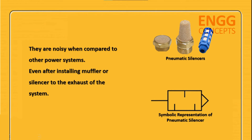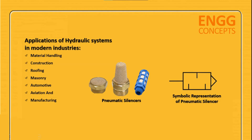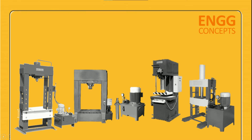Even after installing a muffler or silencer to the exhaust, hydraulic systems are extensively used to perform a wide range of manufacturing operations in the industry. One reason for their popularity is their ability to produce large magnitudes of load. To do their work, hydraulic systems must store fluid under high pressure, typically 2000 pounds per square inch or more.